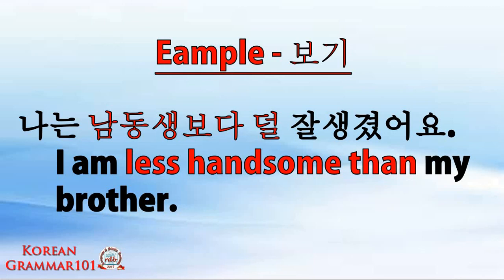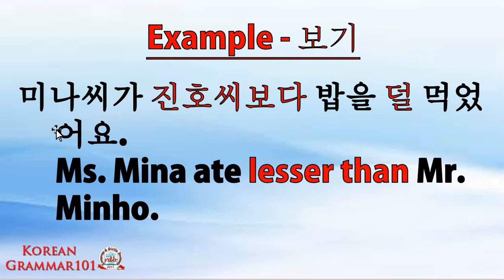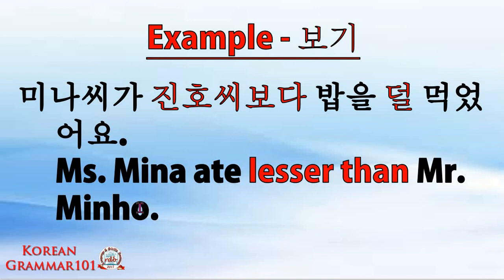Next example: Minasiga jinggu she buddha pabul tol mogo soyo. We are comparing Mina with Jinhu. 'Pabul' comes from 'pap', meaning rice. 'Tol mogo soyo' means ate less. So the sentence means: Miss Mina ate less than Mr. Jinhu.